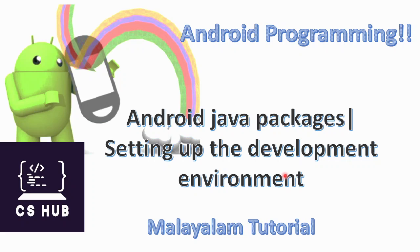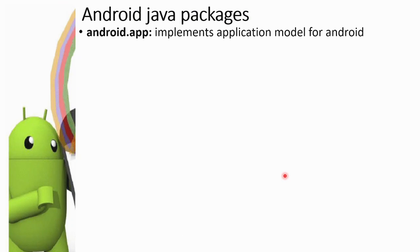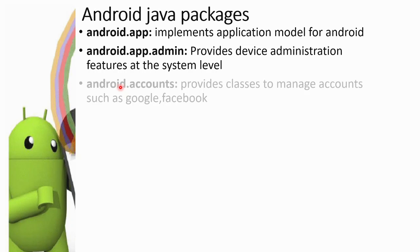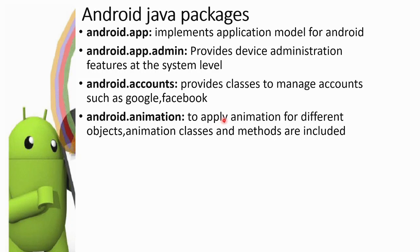Starting with Android Java packages — Android is Java-based programming. The first package is android.app, the main basic package that implements the application model for Android. android.app.admin provides device administration features at the system level. android.accounts manages different accounts like Google, Facebook, etc. android.animation is used to apply animations for different objects — animation classes and methods are included.